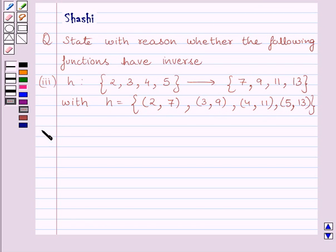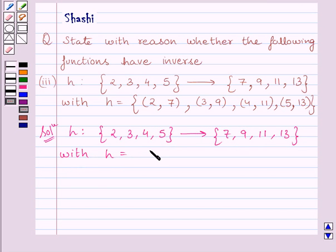Let us start the solution now. We are given H is a function from set {2, 3, 4, 5} to set {7, 9, 11, 13} with H equal to the set of ordered pairs {(2,7), (3,9), (4,11), (5,13)}.